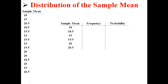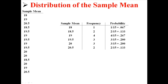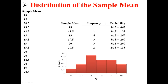We have 6 distinct means here, from 18 through 20.5. Counting up the frequency, it looks like we have the most 19s and the least 18s. If you add up all those frequencies, they add up to 15 — we have 15 total sample means. I find the probability by dividing the frequency by the total number of observations. You can still see the most likely outcome is a 19 and the least likely is 18. Now that we know the probabilities associated with each mean, I can make a histogram and show the distribution of the sample mean.